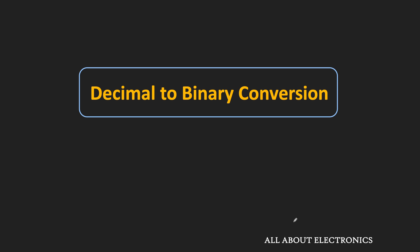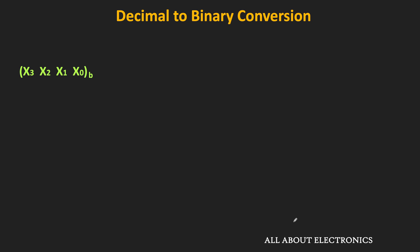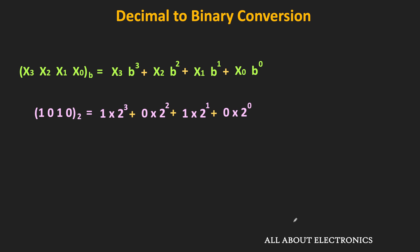In general, if we have some number in one particular number system — let's say a base B number system — this is how we can find its decimal equivalent. For example, if we have some binary number, this is how we can find its decimal equivalent. In fact, in the previous video, we have already seen that. But now let's see, if we have given some decimal number, then how we can find its binary equivalent.